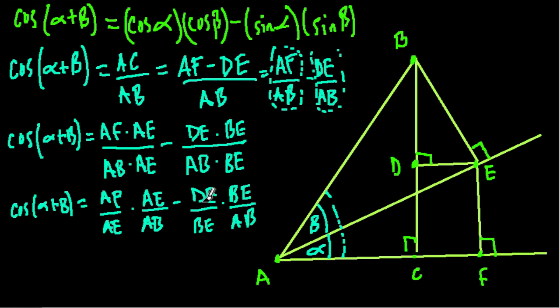This is great because we actually have everything we need now for our identity except for one term. AF over AE, what is that? Well, that is AF right here. AE is the hypotenuse. And if alpha is right here, AF is the adjacent side to alpha, and AE is the hypotenuse of triangle AEF. So this is just the cosine of alpha. That's the first part of our identity.